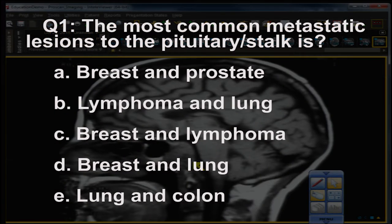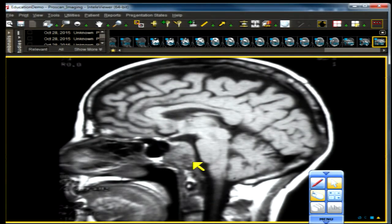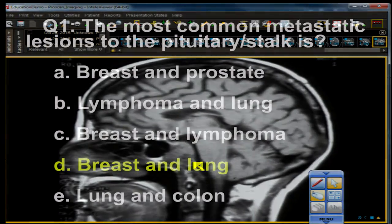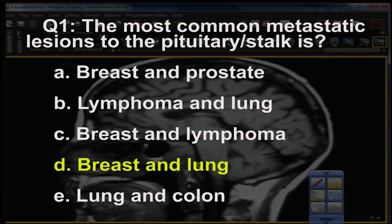We're going to turn our attention to the question. Question number one: the most common metastatic lesion to the pituitary gland or stalk is — A: breast and prostate, B: lymphoma and lung, C: breast and lymphoma, D: breast and lung, E: lung and colon.